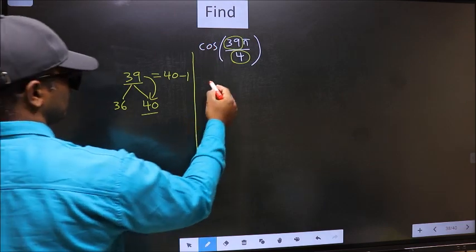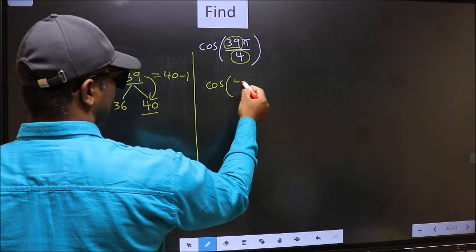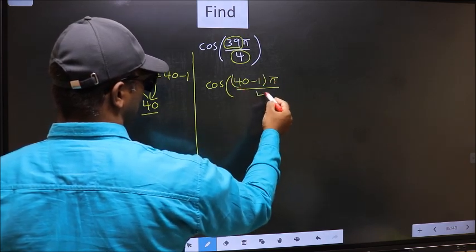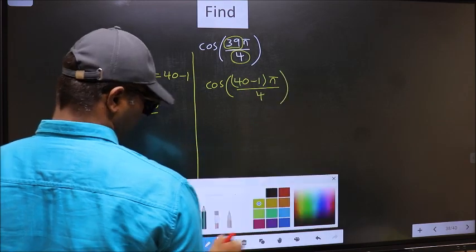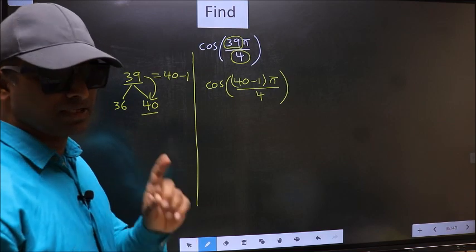So this will become cos, and in place of 39, you write 40 minus 1, pi by 4. This is your step 1.